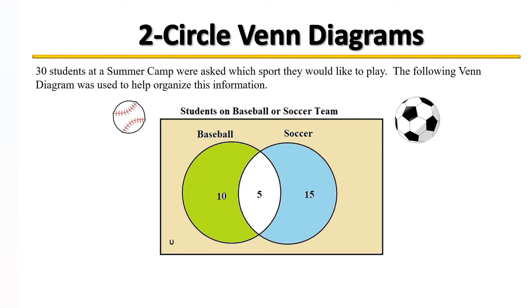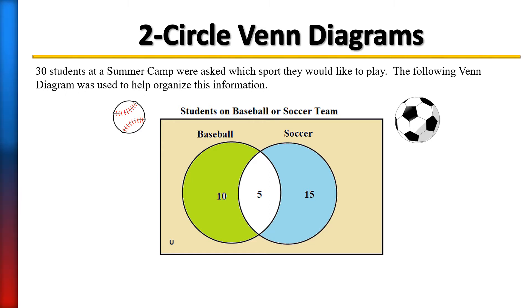30 students at a summer camp were asked which sport they would like to play. The following Venn diagram was used to help organize this information. Notice that the diagram shows 10 students preferred baseball and 15 students preferred soccer. Recall that the part where the two circles overlap — the intersection — shows the students who preferred to play both baseball and soccer.